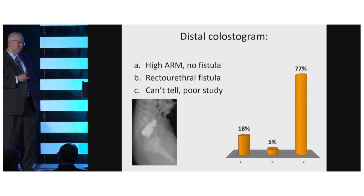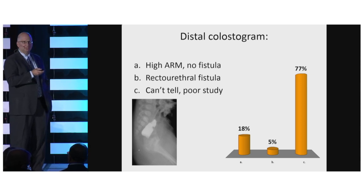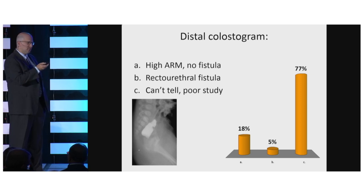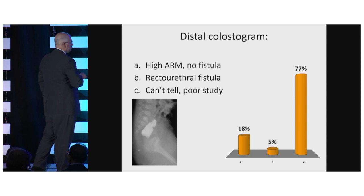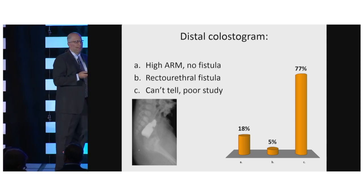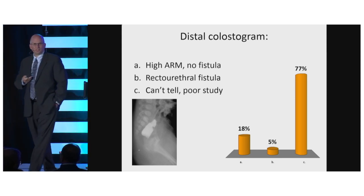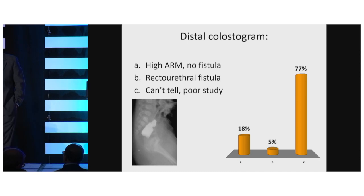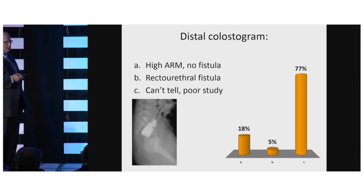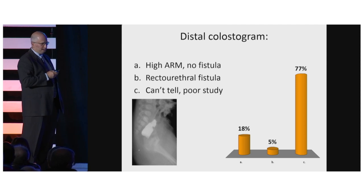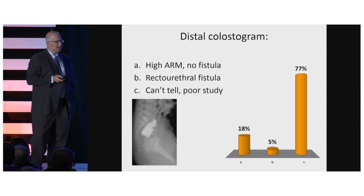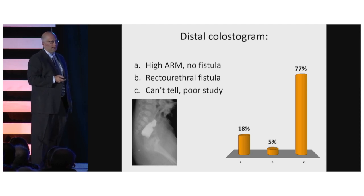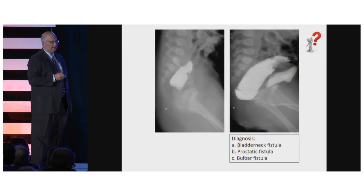What's important to recognize is you'll never find a rectum that at the bottom is flat. It's flat because of the PC line - the pubococcygeal line - where the sphincters compress the rectum inside the pelvis. This distal colostogram has not been given enough pressure, so if you were to approach this rectum you won't know exactly where the distal rectum is.